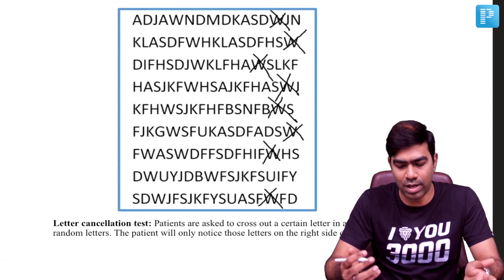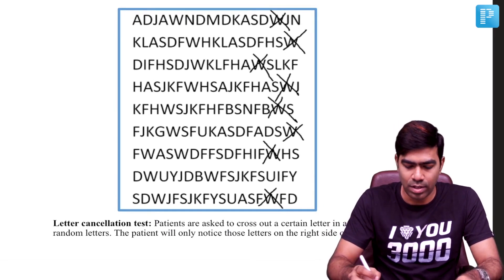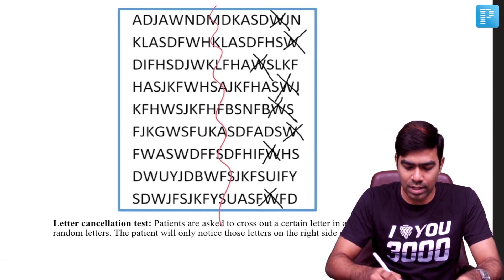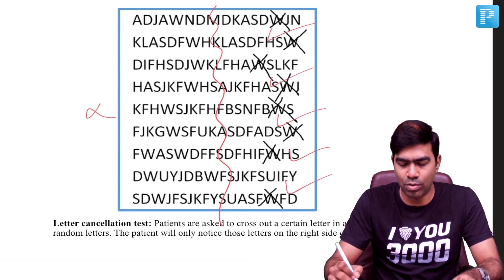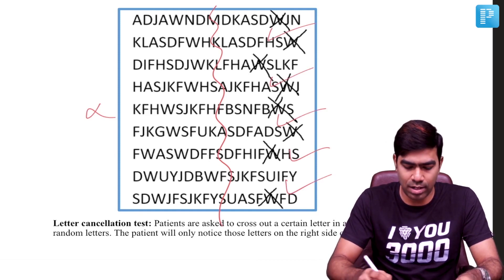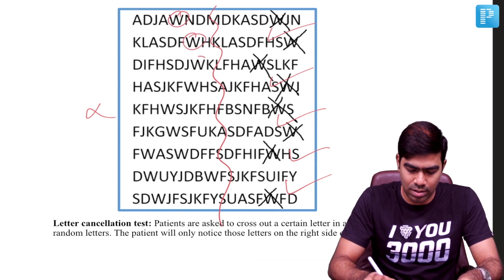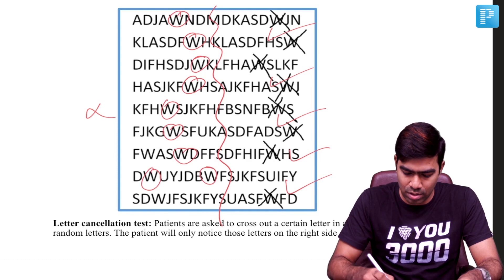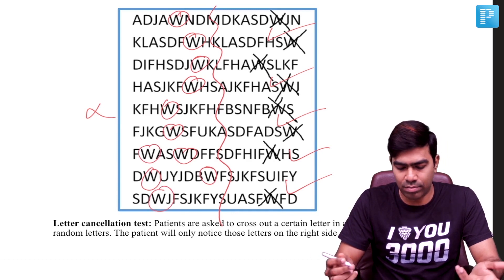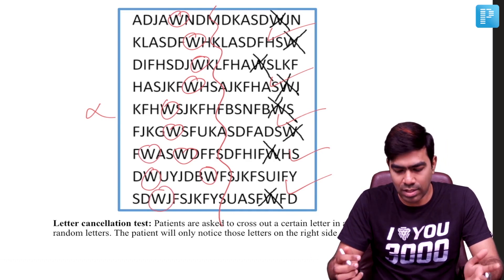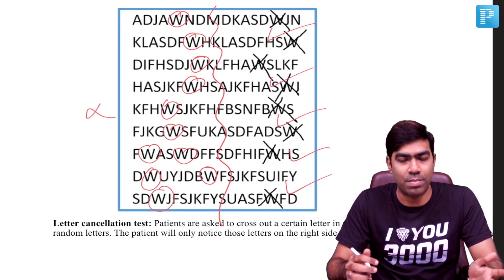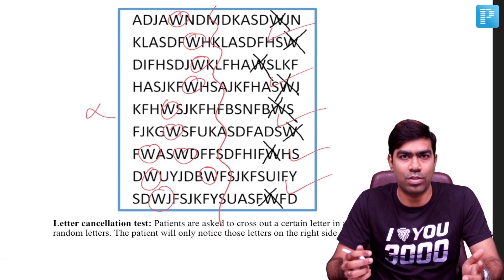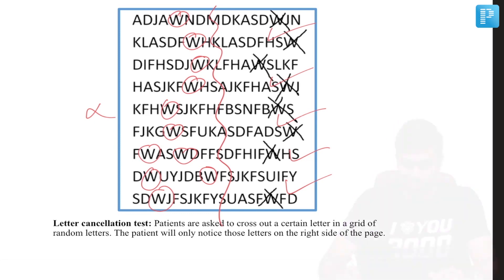In the letter cancellation test, the patient is asked to cancel out a certain letter — in this case, the letter W. You can see that the patient has ignored the entire left side and has correctly cancelled the W's on the right side, but there are many W's left uncrossed on the left side. This again confirms that the patient has contralateral hemispatial neglect due to damage to the right parietal lobe.